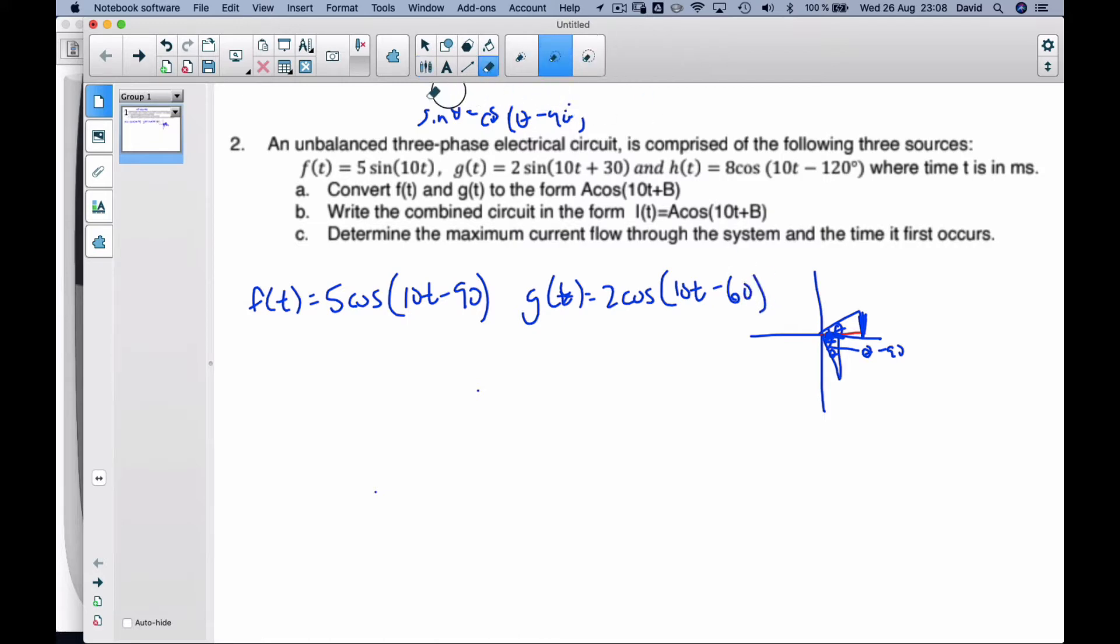Now when I do my complex numbers, I have to realize that my calculator really only works in radians. So this is going to be π/2, this is minus π/3, and this one is 2π/3.